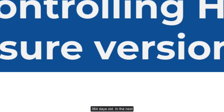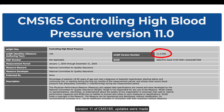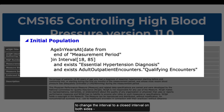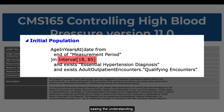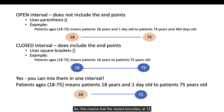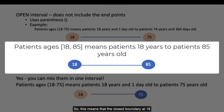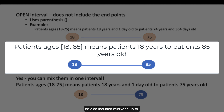In the next version, 11, of CMS165, updates were made to change the interval to a closed interval on both sides, easing the understanding. So this means that the closed boundary at 18 includes 18-year-olds, and the closed boundary at 85 also includes everyone up to 85 years old.